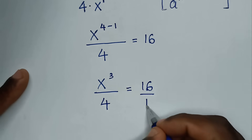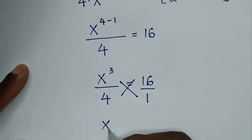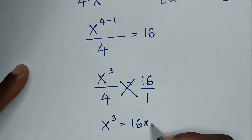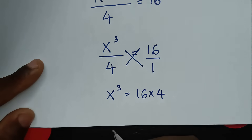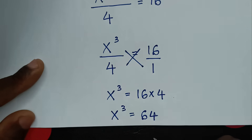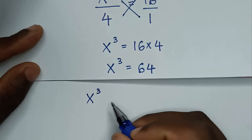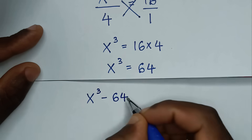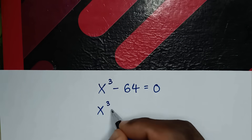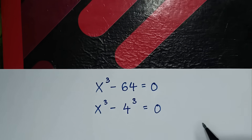Now, 16 is the same as 16 over 1, so we cross multiply. It will be x power of 3 times 1, so x power of 3 is equal to 4 times 16, which is 64. Taking 64 to the left side, it will be x power of 3 minus 64 is equal to 0. And 64 is the same as 4 power of 3.